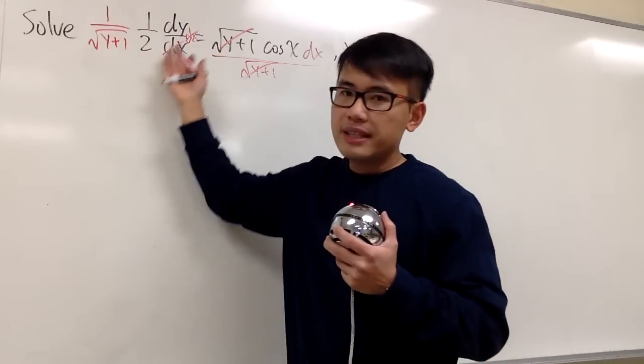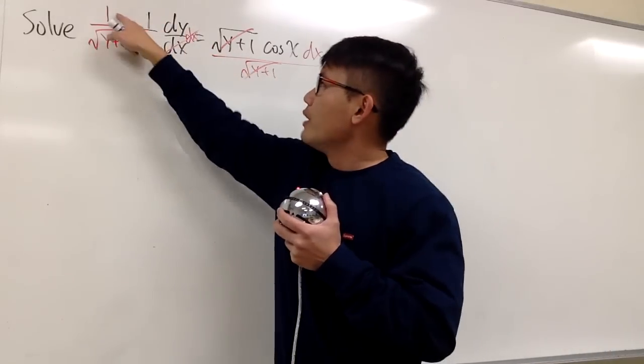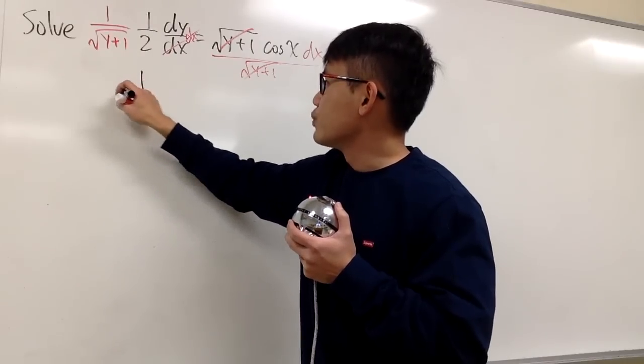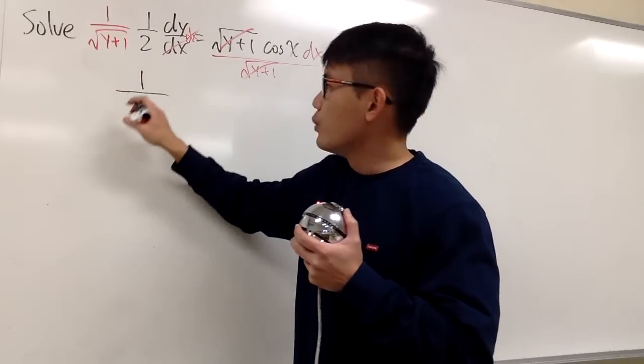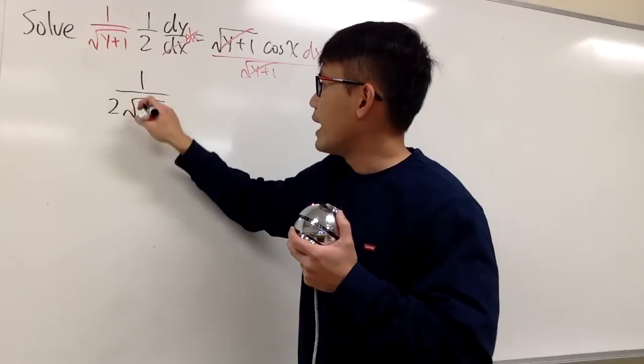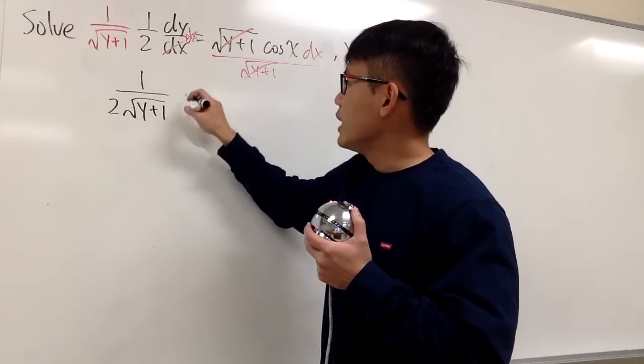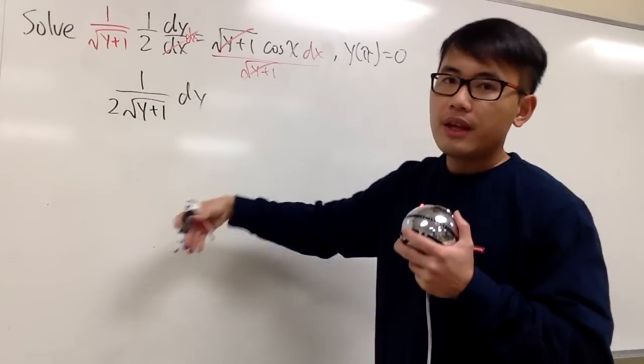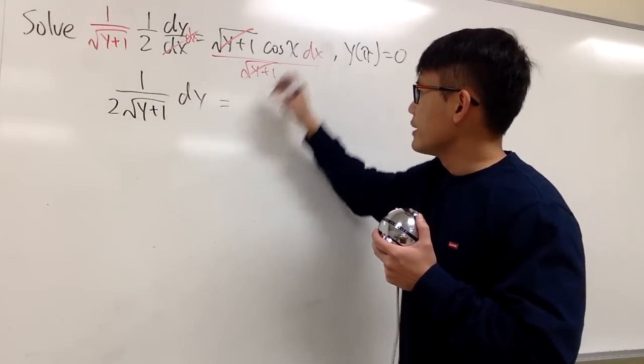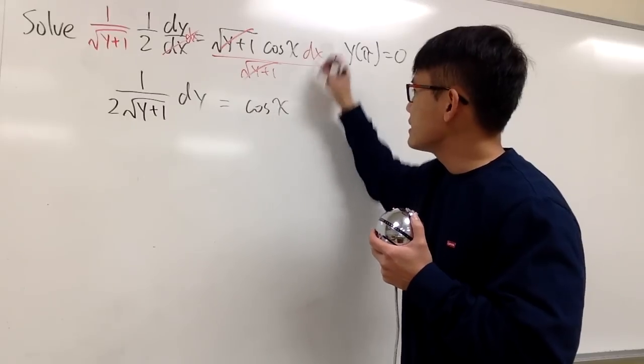Okay, to clean things up on the left-hand side, 1 times 1 is just 1. And we'll write this down as 1 over, put the 2 in the front, 1 over 2 square root of y plus 1. And we have the dy here. And that's equal to, on the right-hand side, which is cosine x dx.